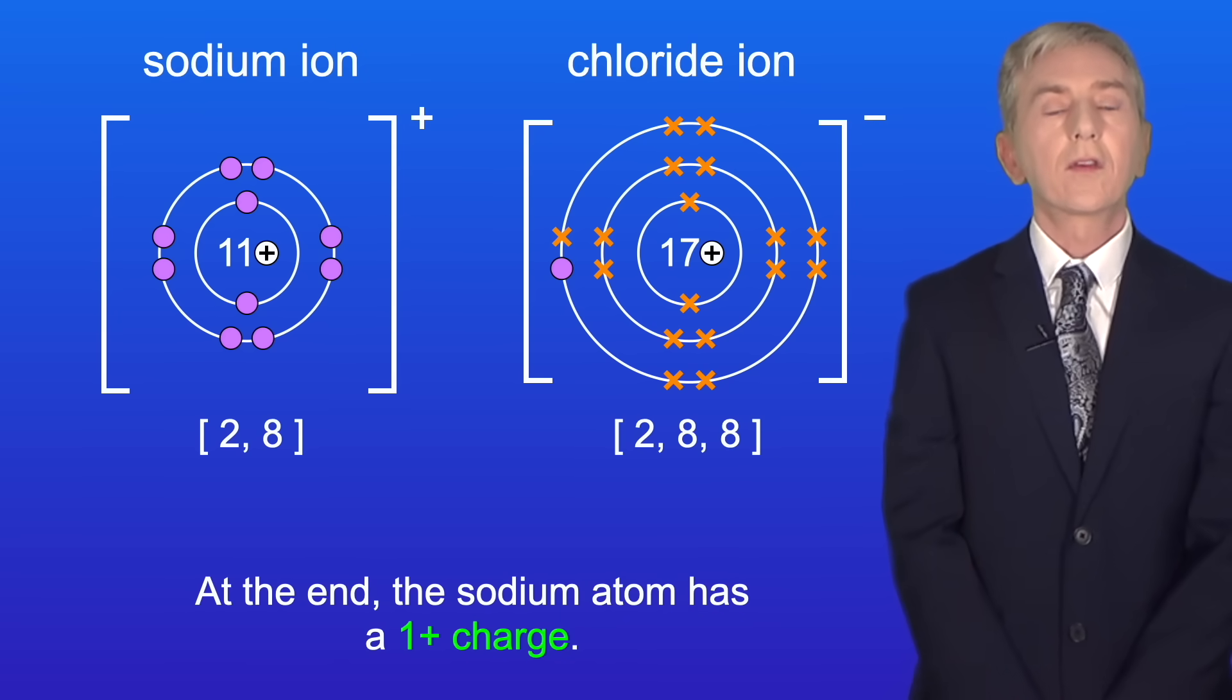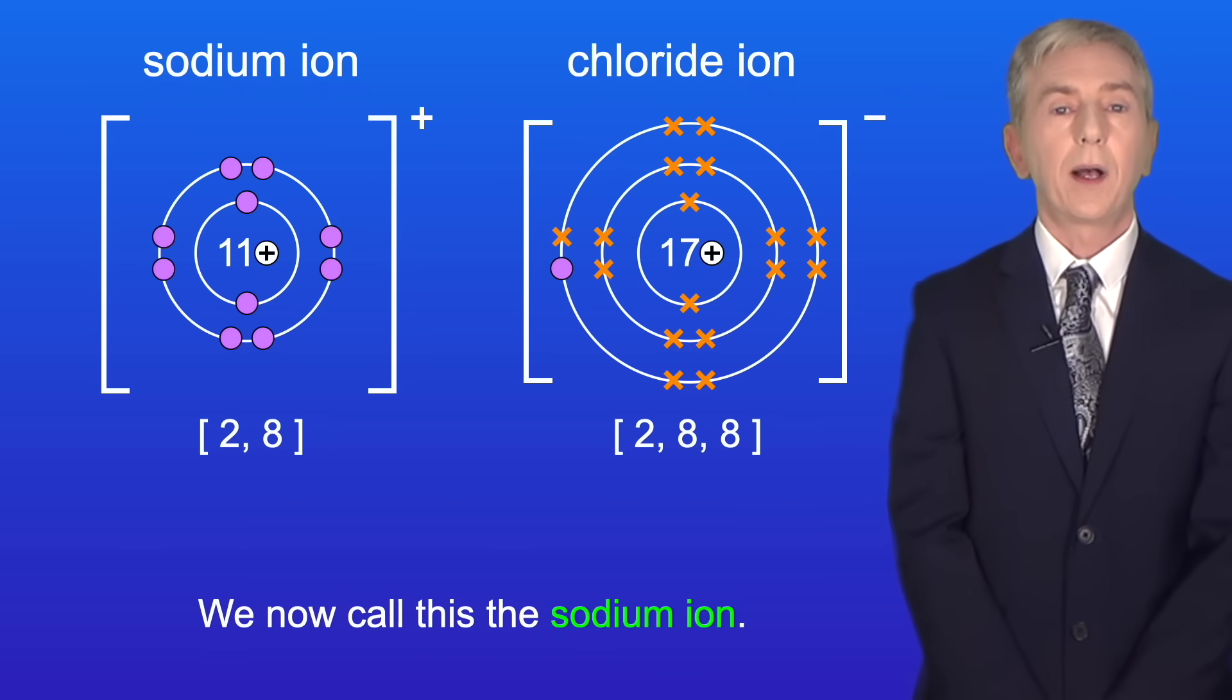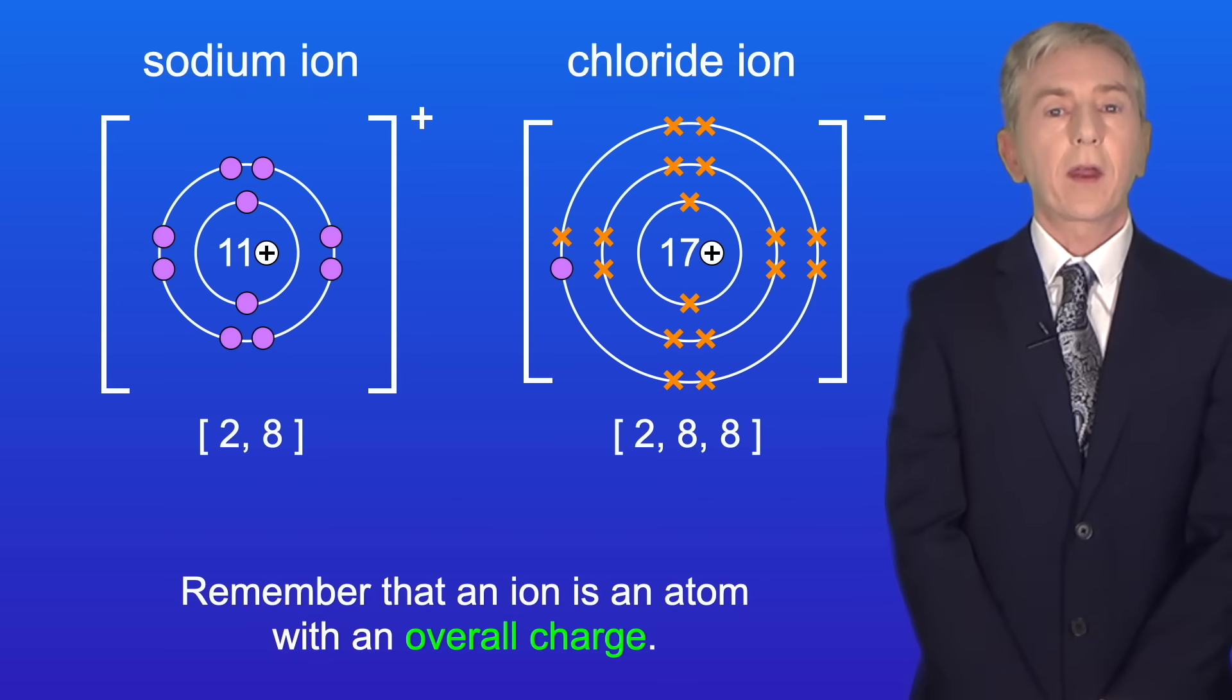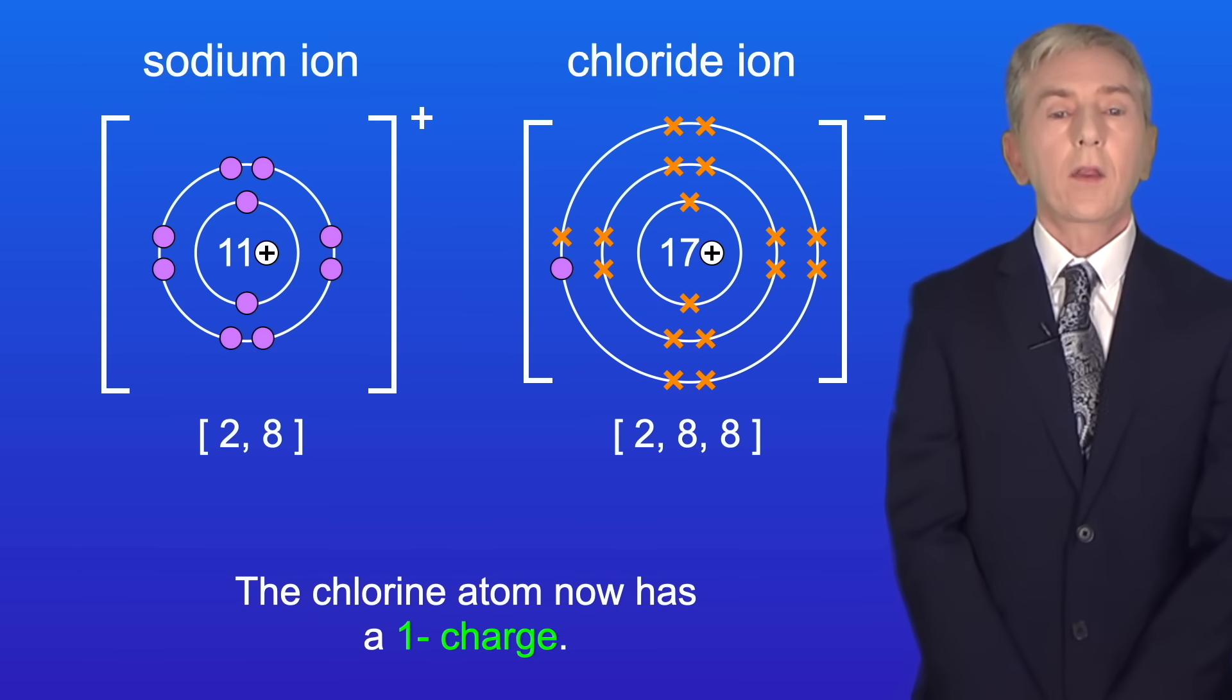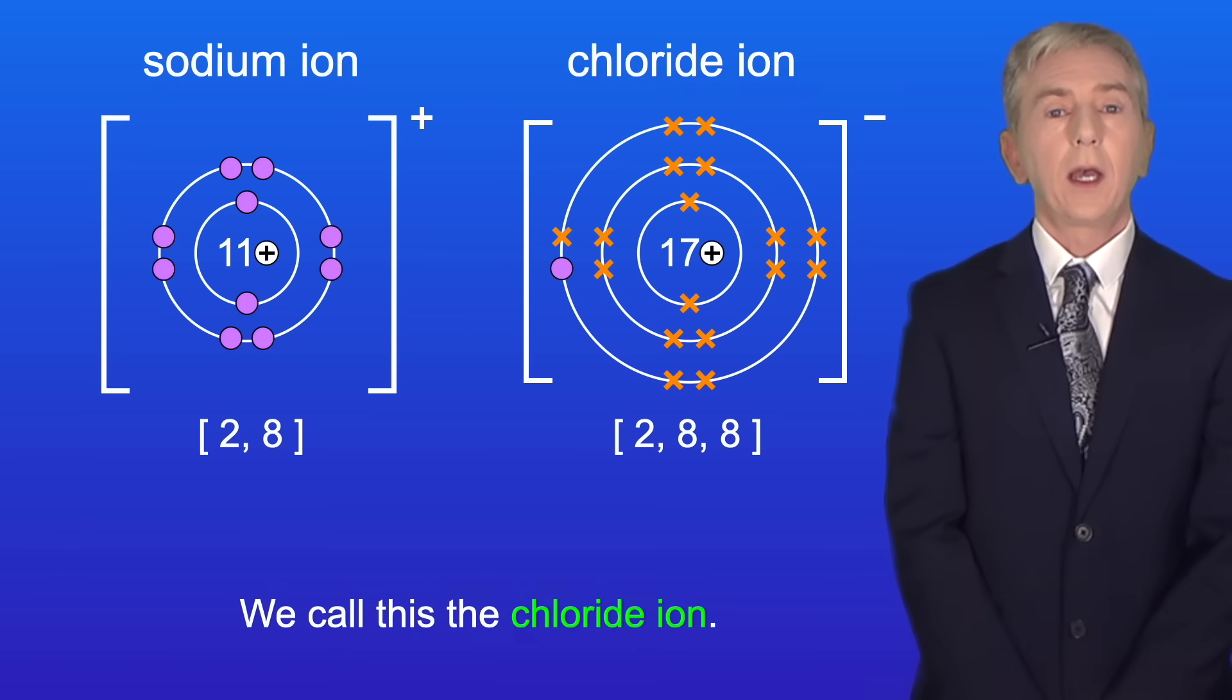At the end, the sodium atom has a one positive charge, and we now call this a sodium ion. Remember that an ion is an atom with an overall charge. The chlorine atom now has a one negative charge, and we call this the chloride ion.